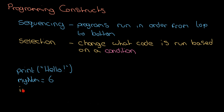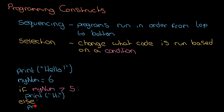Let's write an example: 'if my_num is greater than five, print high, else print low.' What happens within this selection statement is the condition is evaluated — we look to see if 'my_num greater than five' is either true or false.